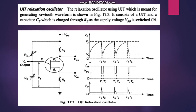The UJT relaxation oscillator uses VBB supply. When 5V is applied, current flows through R2 and R1. The capacitor charges through the emitter resistance RE. The arrow mark on the symbol represents the emitter current flowing through Base 1. The capacitor charges up to the emitter-Base 1 path through resistance R1.